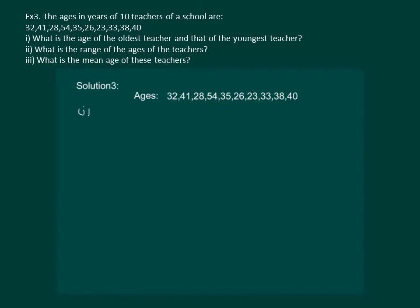To find the age of the youngest and the oldest teacher, let us rearrange this data in ascending order. So, the entry would be 23, 26, 28, 32, 33, 35, 38, 40, 41 and 54.